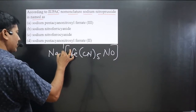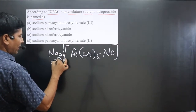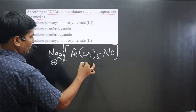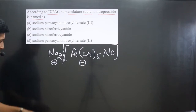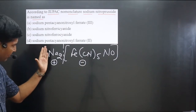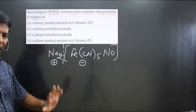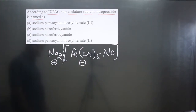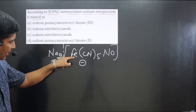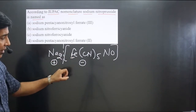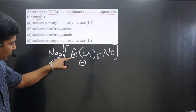If we break the formula, this part is the cationic part and the remaining is the anionic part. First we have to do the naming for the cationic part, followed by the anionic part. You can see the central element is present in the anionic part.